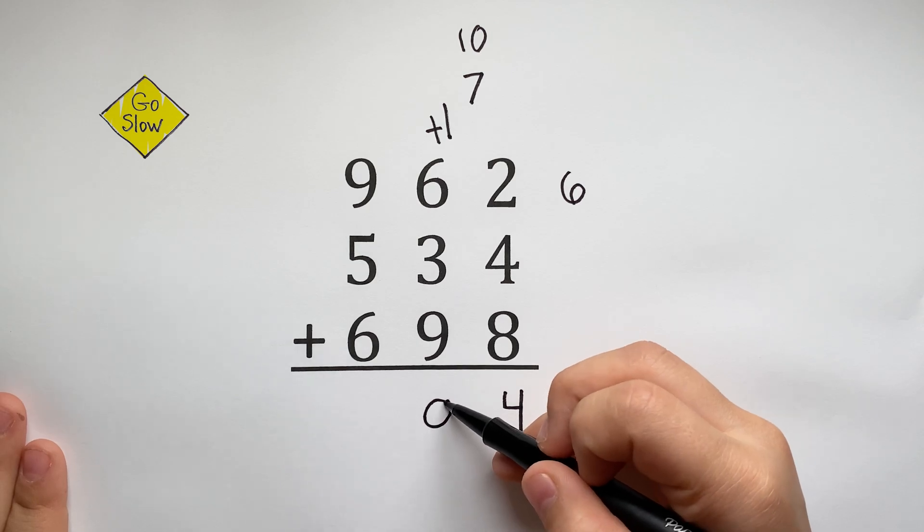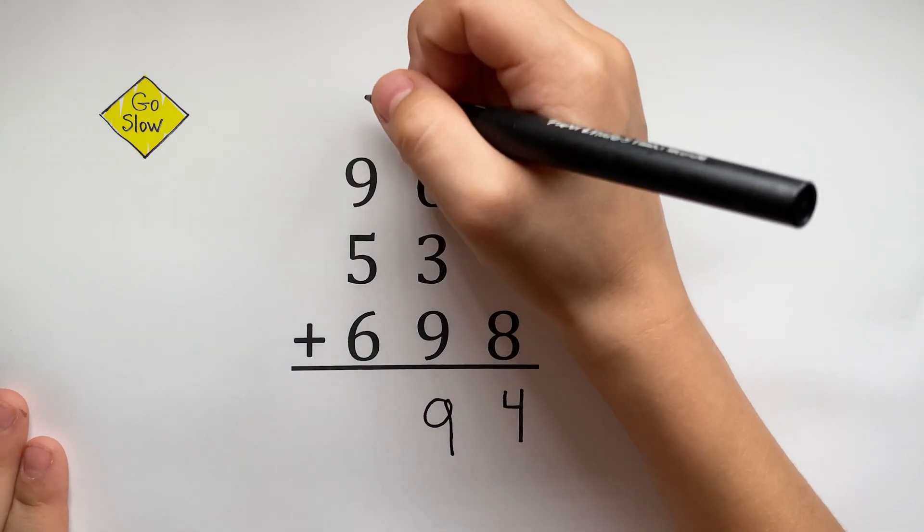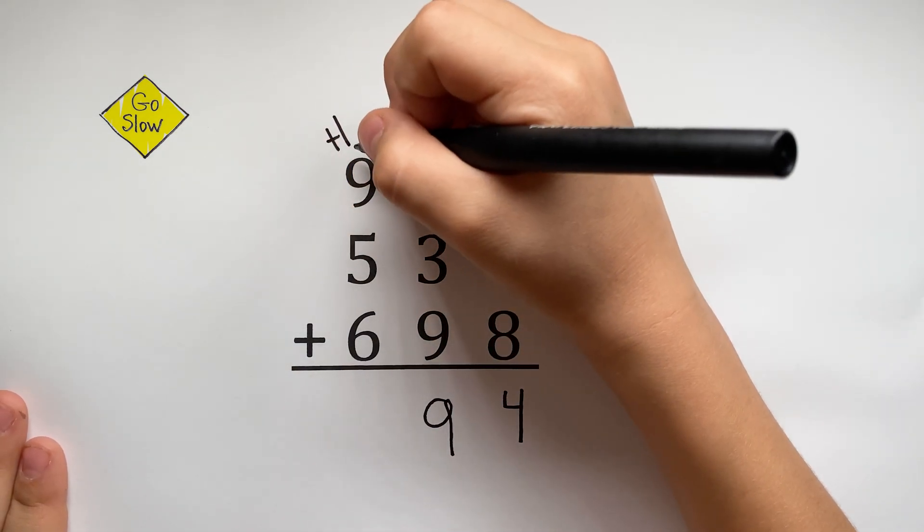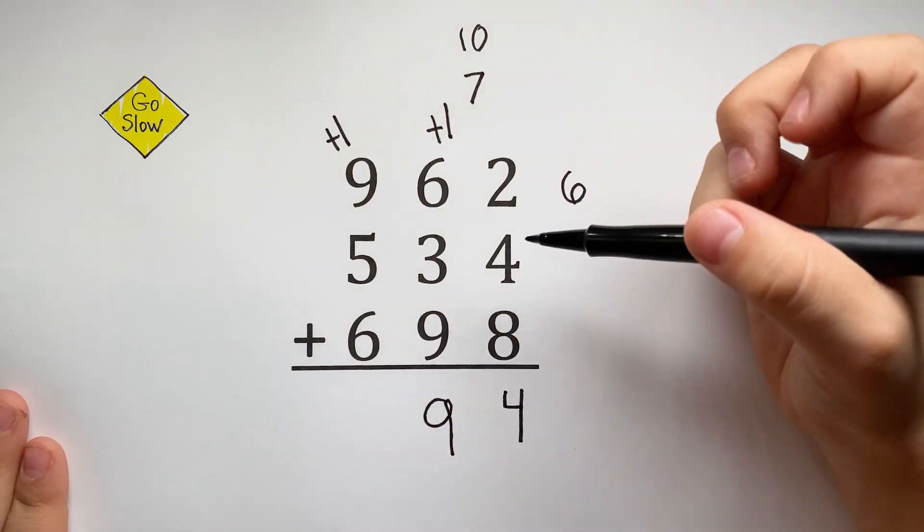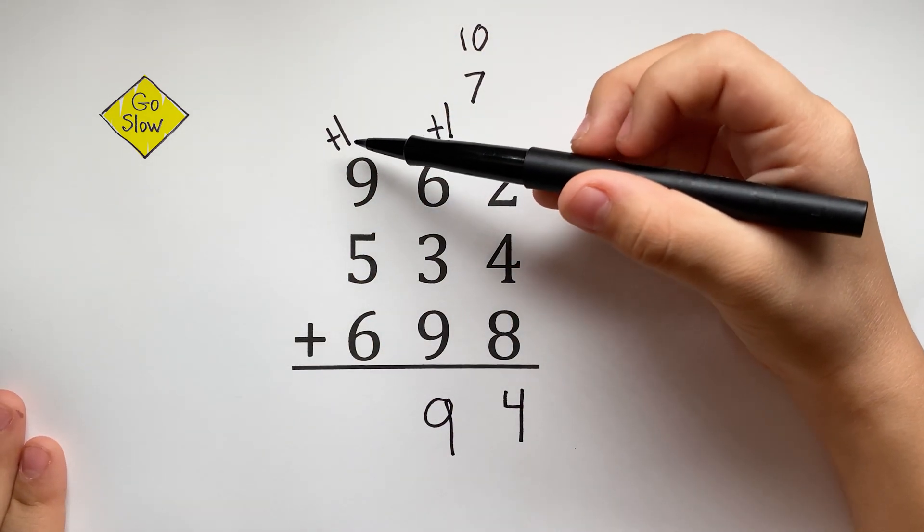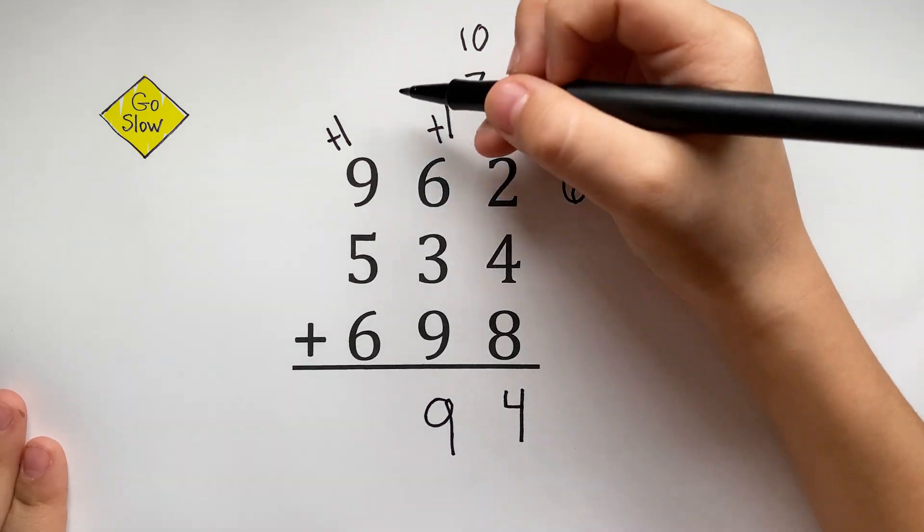We're going to put the 9 under the tens column and put the 1 on top of the hundreds column. 9 plus 1 equals 10.